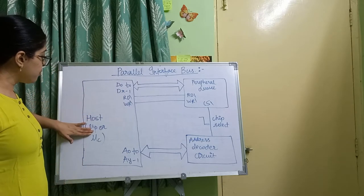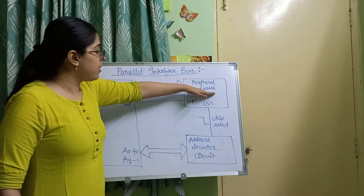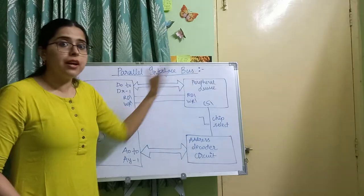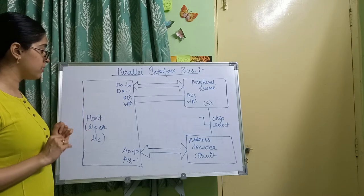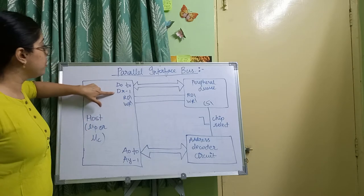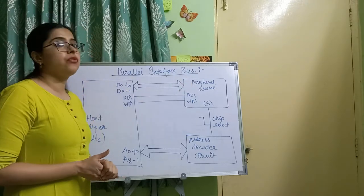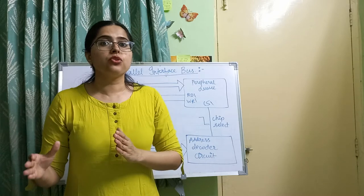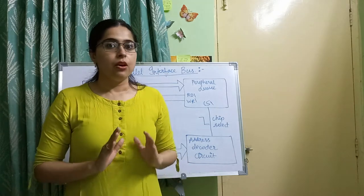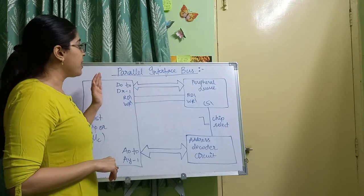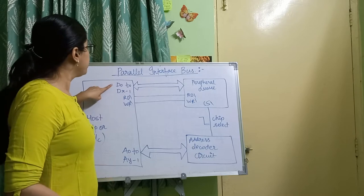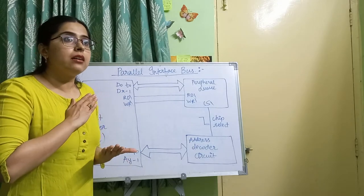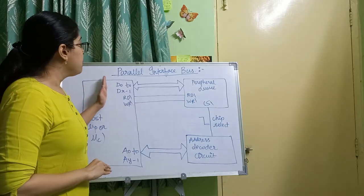Here you can see a host microprocessor or microcontroller and peripheral devices it wants to communicate with. The data bus D0 to Dx-1 is connected to the data bus of the peripheral device. Every microprocessor or microcontroller in an embedded system has a parallel bus inside it, and the device it communicates with must also have that parallel bus. The width of the parallel lines equals the data bus width of the microprocessor.